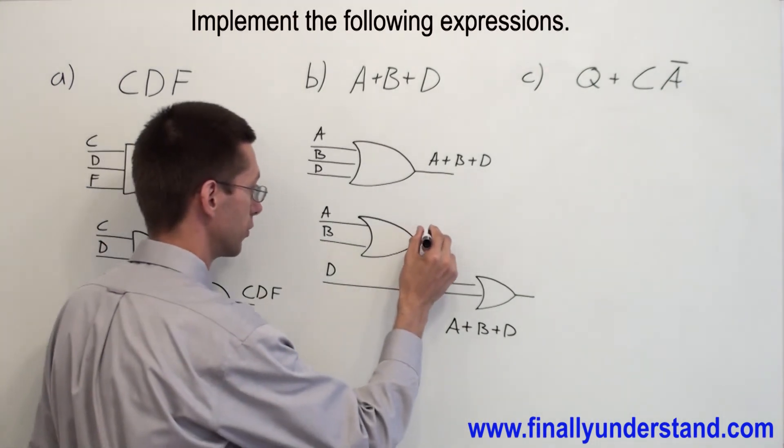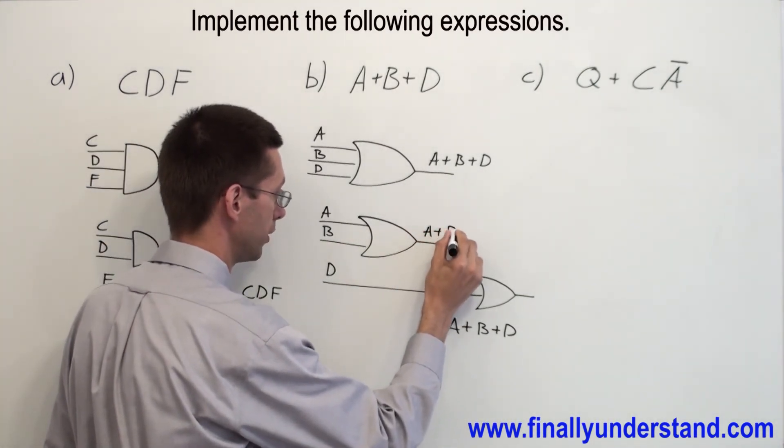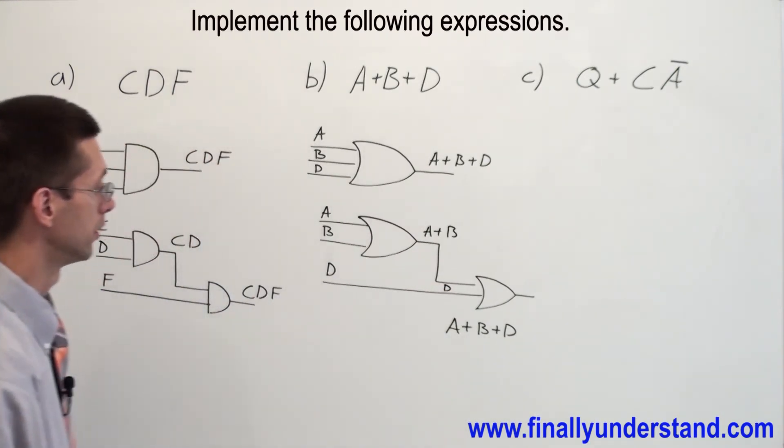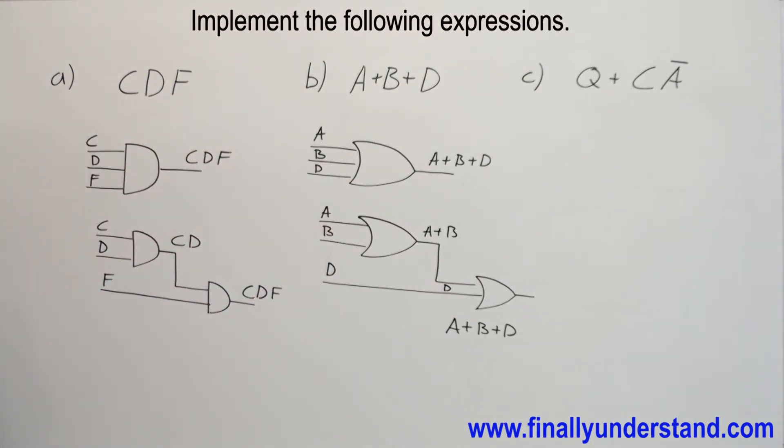Okay, because I am going to have over here A or B. This is my D. This is a three input OR gate. Let's take a look at the next example.